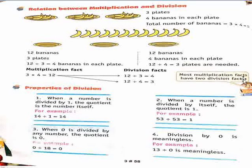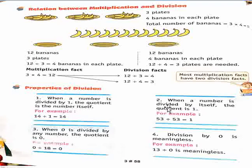Most multiplication facts have 2 division facts. Now, properties of division. First property: if we divide a number by 1, then the same number will come. And second property: when a number is divided by itself, the answer is 1.